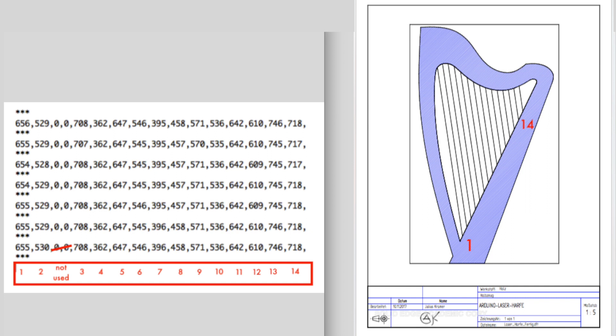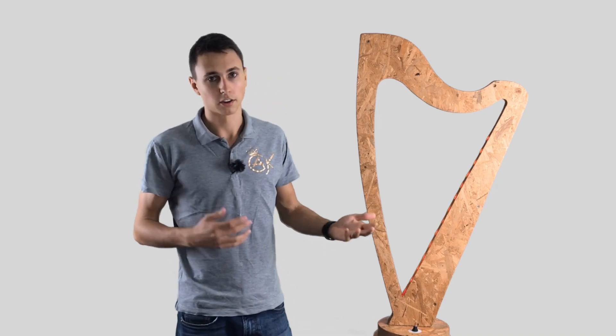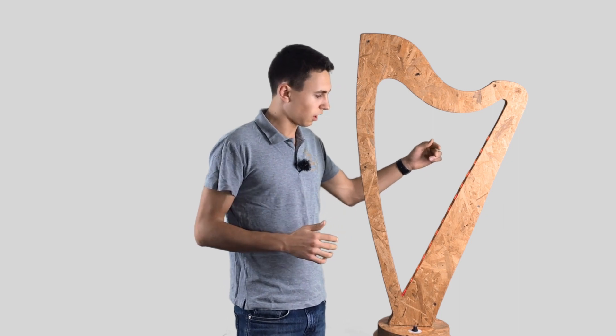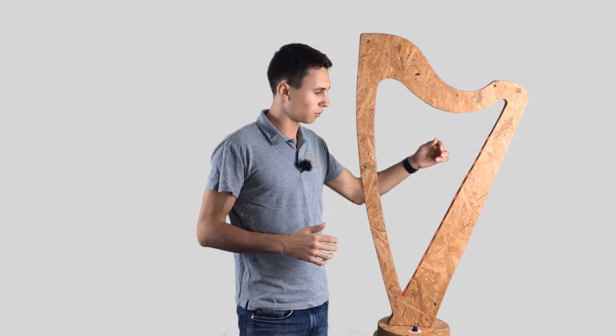Therefore, you can also assign this to any other instrument you want, but for this time I chose a harp. And from now on it's just as simple as putting something in the way between each light barrier. For example, here for this note or here for another, it's just as simple as that and with that you can even play a whole melody.